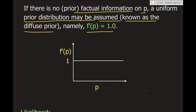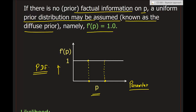We use a diffuse prior where f'(P) = 1. Plotting the prior density function: on the x-axis we have the parameter P (the proportion of defective piles), and on the y-axis we have the corresponding PDF value. For any proportion, the prior is constant at 1 — this is the uniform, or diffuse, prior.